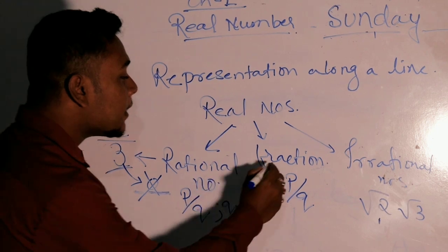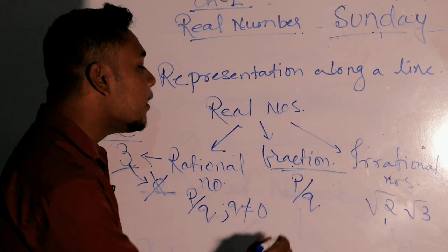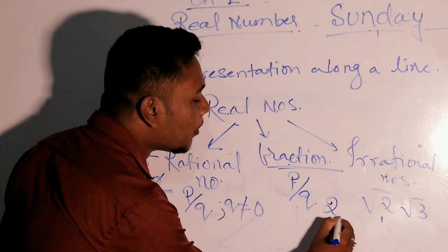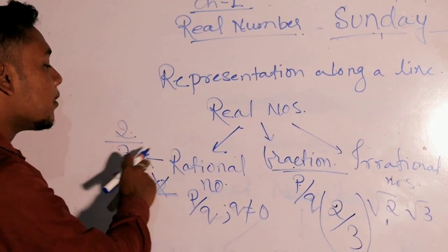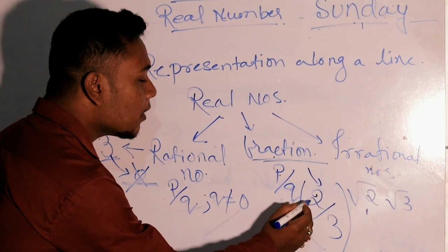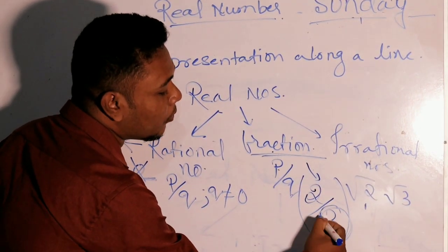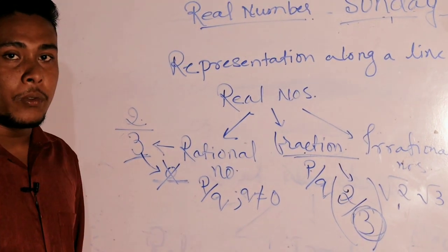Next is fraction. Fraction we have studied earlier in class 6 - any number that can be expressed in the form of p by q, for example 2 by 3. 2 by 3 was rational number so it is also a fraction because it has the denominator as a number with value not 0.